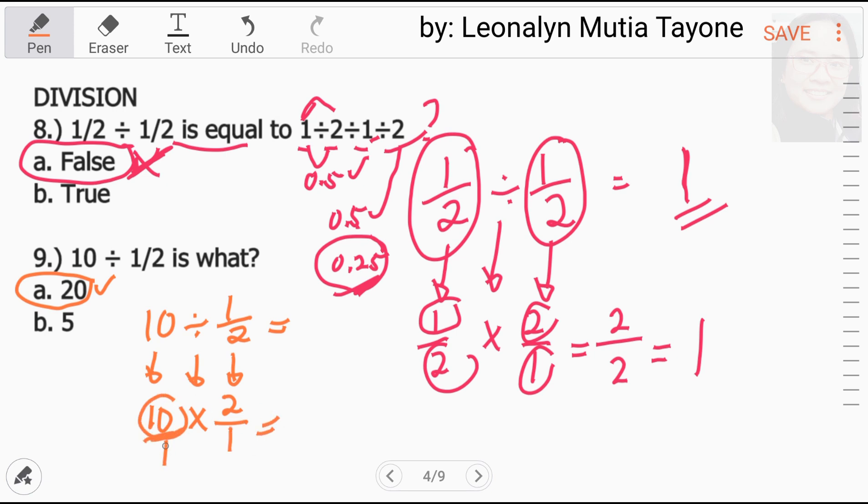So, 10. Ito, automatic man yan na may denominator na 1. Lahat ng mga whole numbers. So, 10 times 2 equals 20. So, ang sagot sa number 9 ay 20.